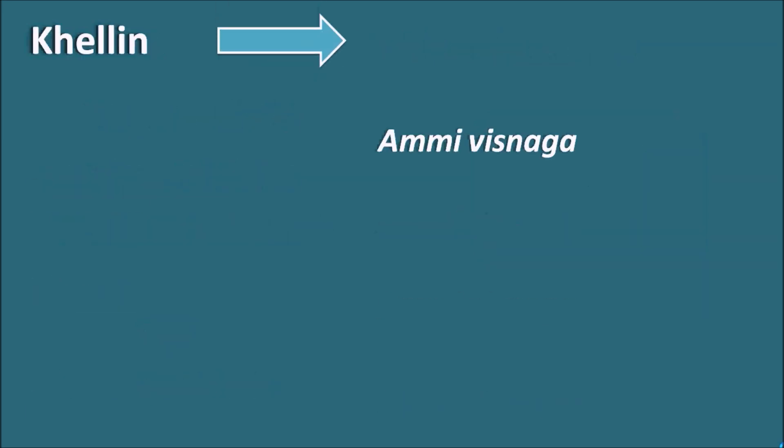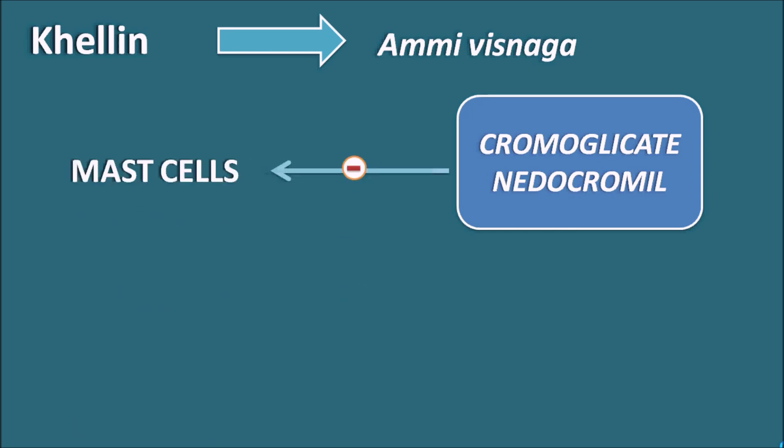Next is khellin. Khellin comes from Ammi visnaga and is not used in allopathy. However, synthetic analogs like cromoglycate and nedocromil are widely used. These two drugs act as mast cell stabilizers, stabilizing mast cells so they cannot undergo degranulation.